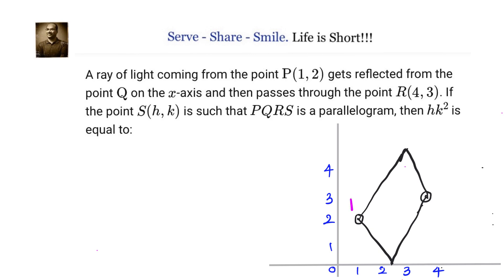A ray of light is coming from point P(1, 2), gets reflected from the x-axis at point Q, and passes through point R. There is a point S such that PQRS is a parallelogram. What is the approach to solve this problem, or what are the concepts we are going to use?